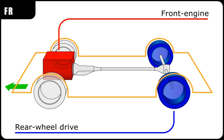Rear-engine, front-wheel drive. A rear-engine, front-wheel drive layout is one in which the engine is between or behind the rear wheels, and drives the front wheels via a driveshaft — the complete reverse of a conventional front-engine, rear-wheel drive vehicle layout. This layout has only been used on prototype and concept cars.